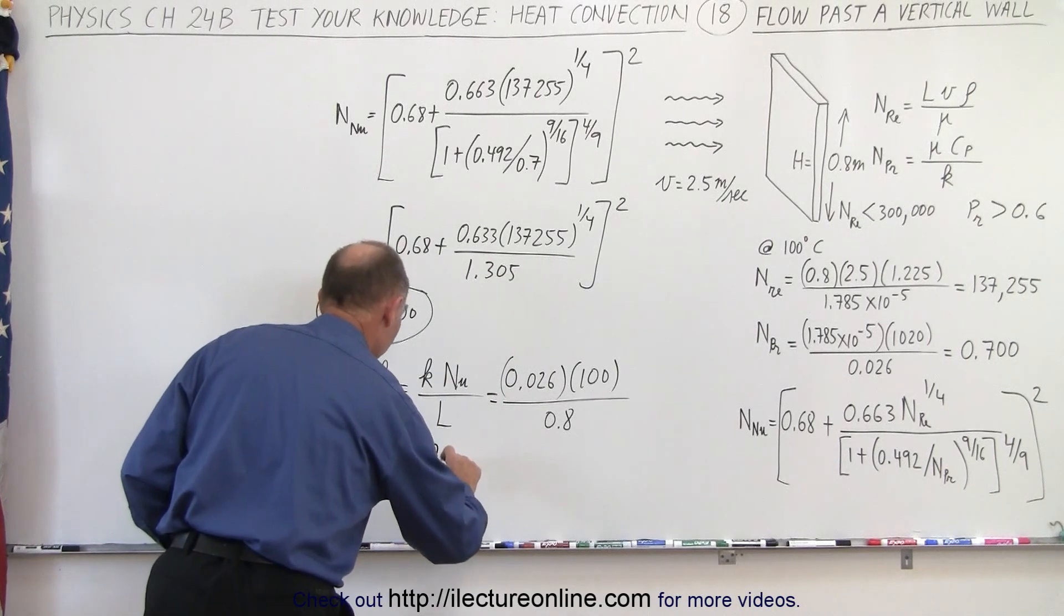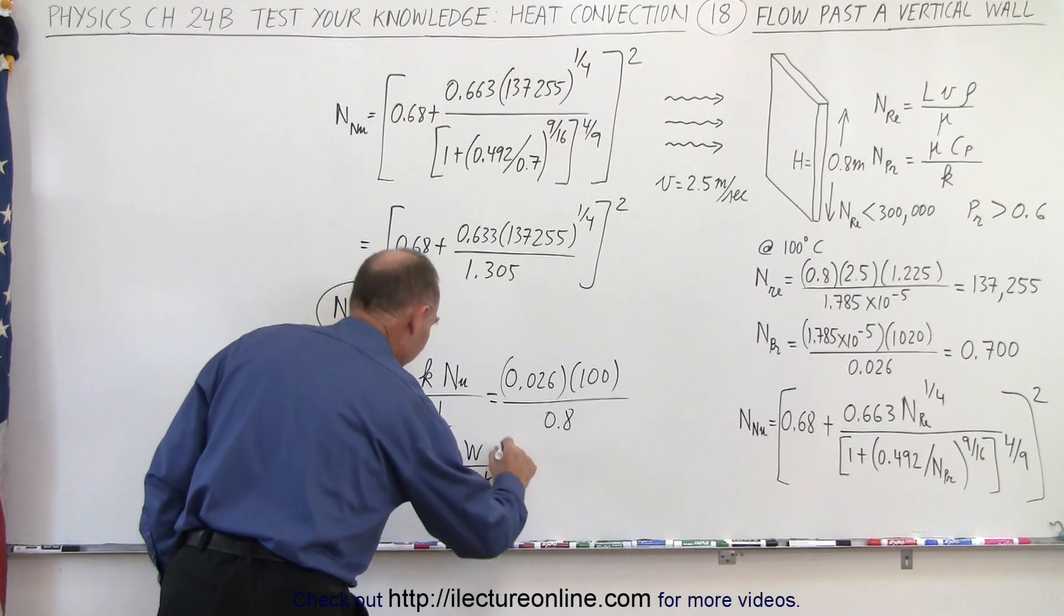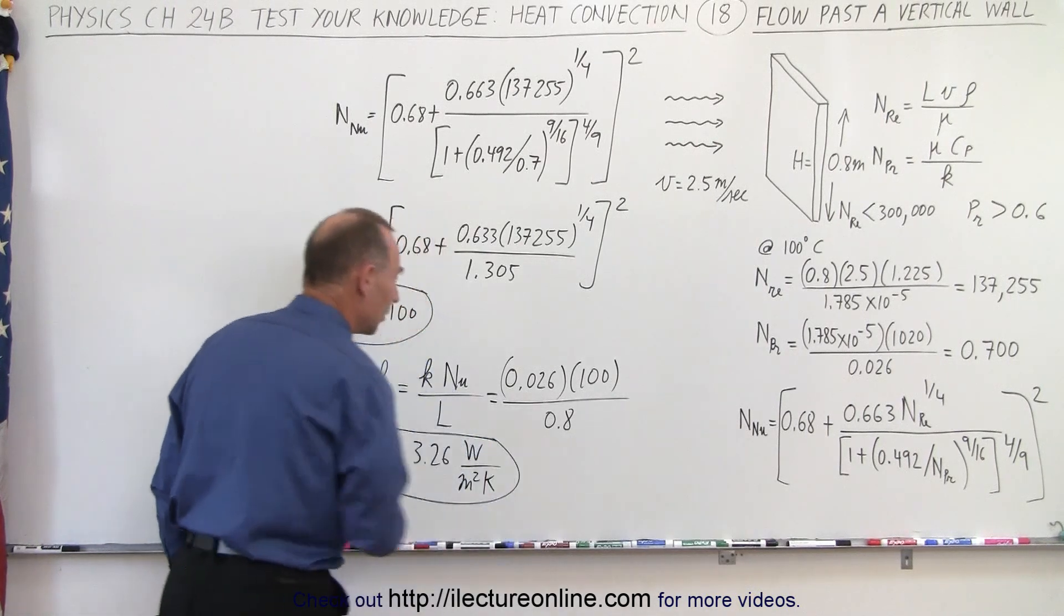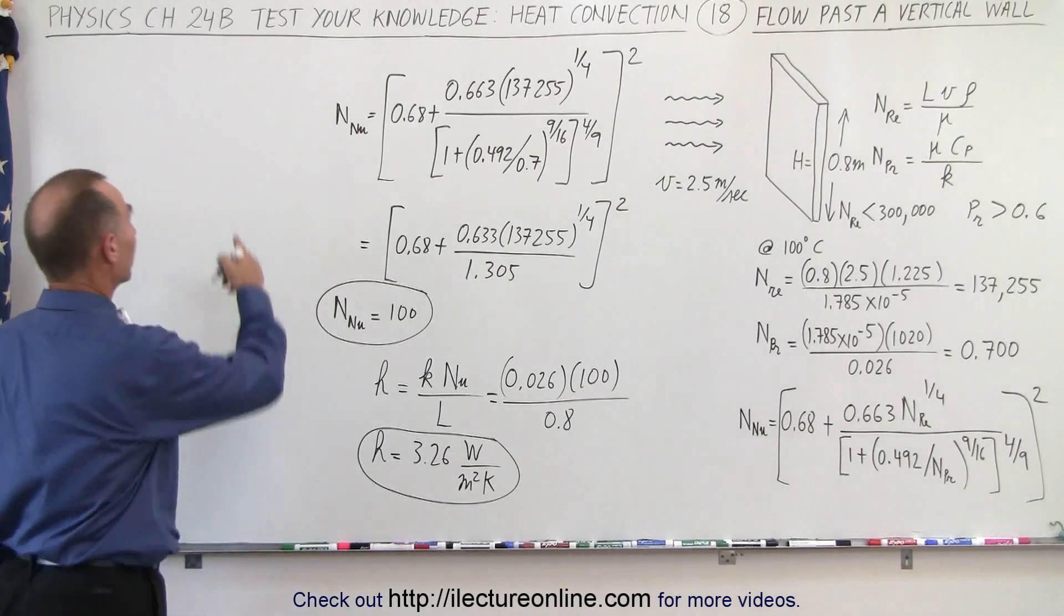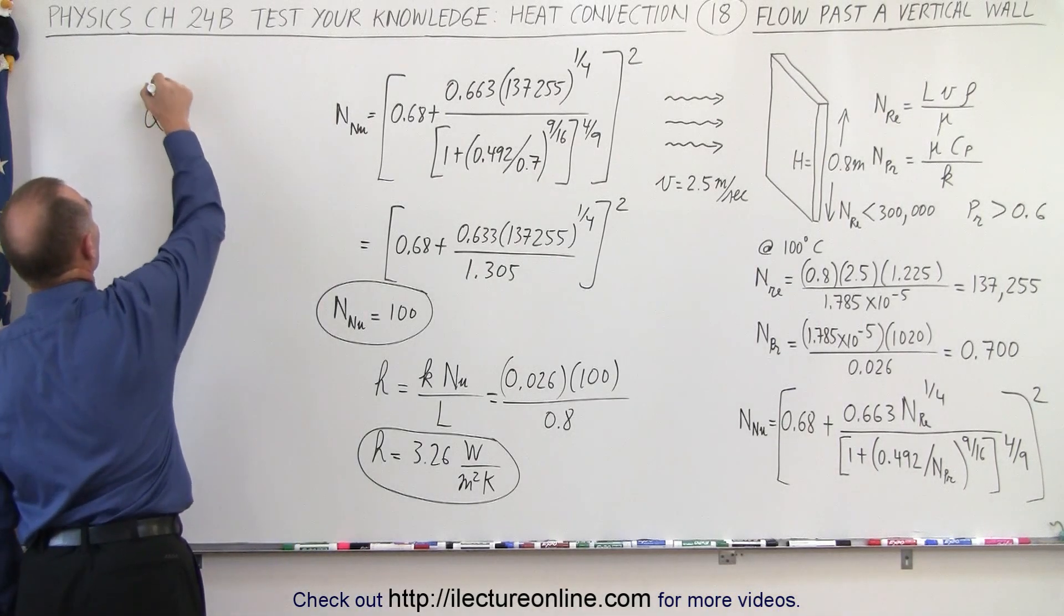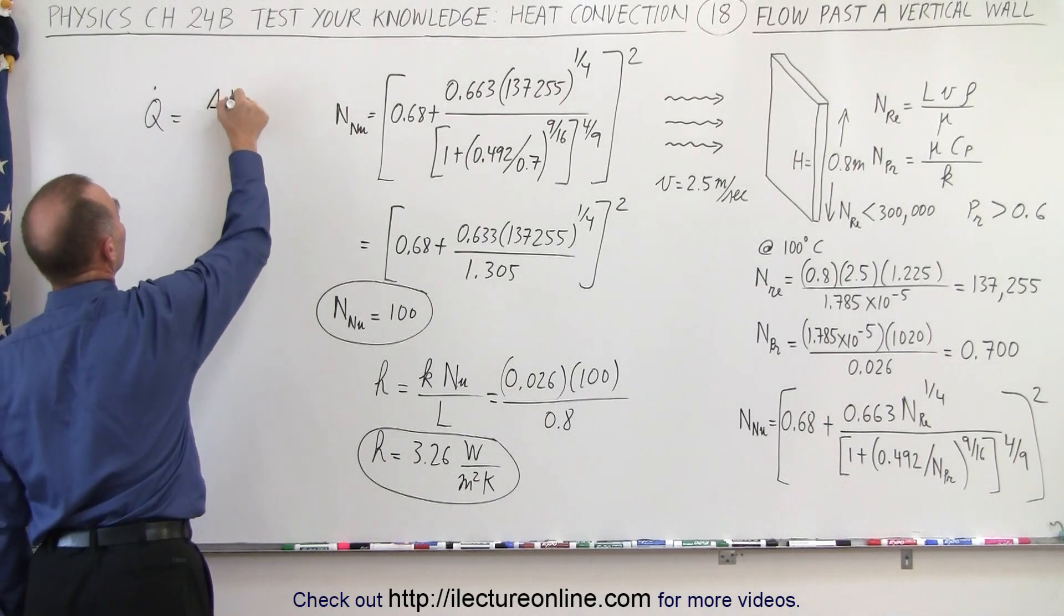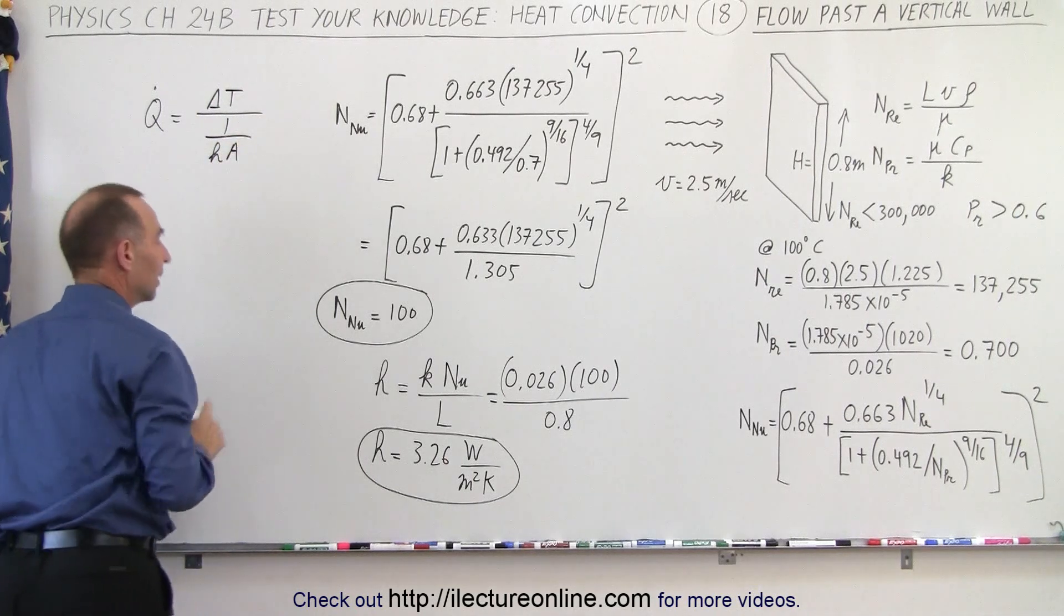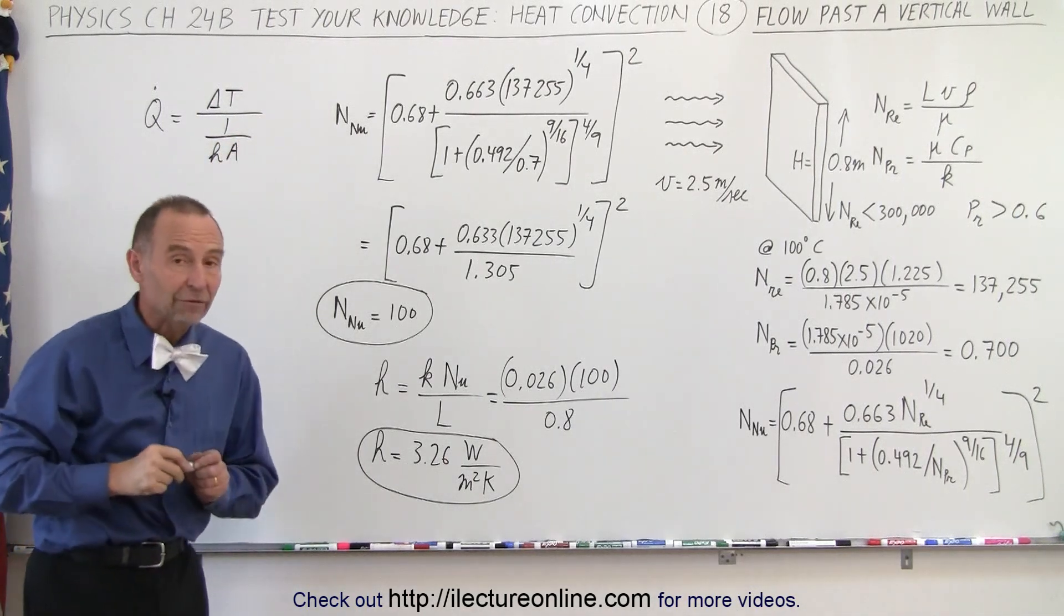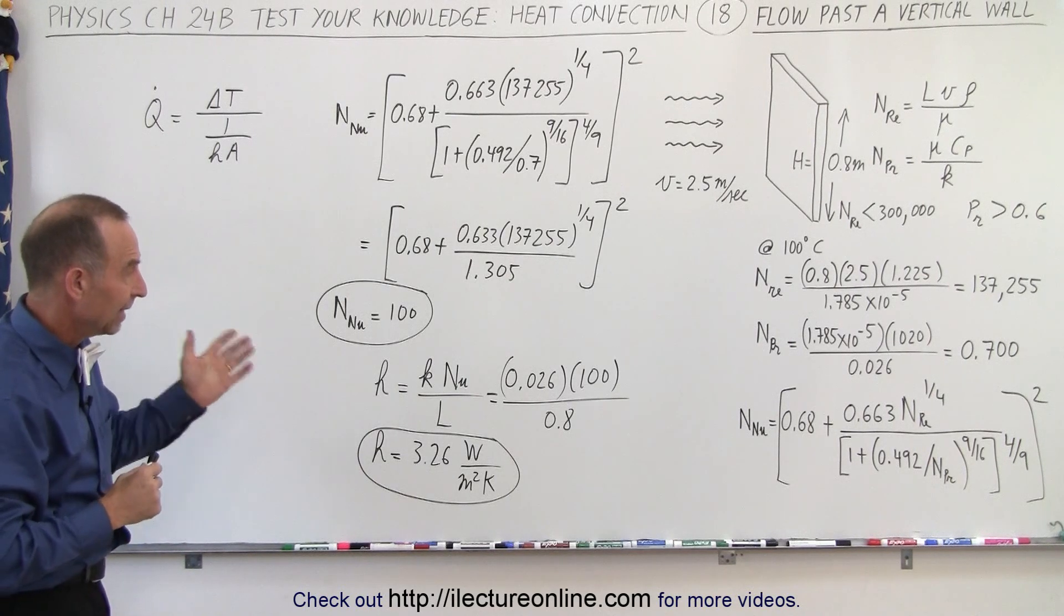Then of course we would plug that into the heat transmission: q equals the delta T divided by 1 over h times A. That's how we get the heat flow away from the vertical wall with air flowing at it at 2.5 meters per second.